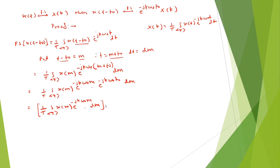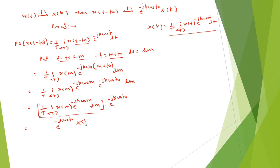Taking this as an entire term, into e raised to minus jk omega 0 into t0. Comparing the term in the bracket with the standard equation, it represents the Fourier series coefficient. The variable m can be changed to another variable, and we can represent it by x of k. So the result is e raised to minus jk omega 0 t0 into x of k. And hence, it is proved.